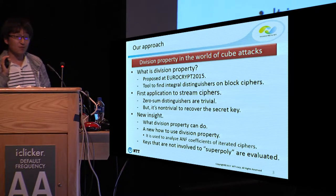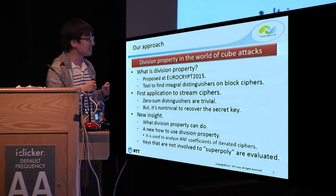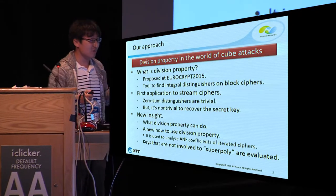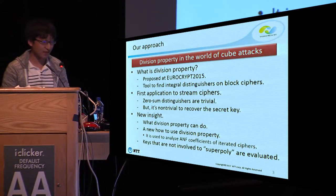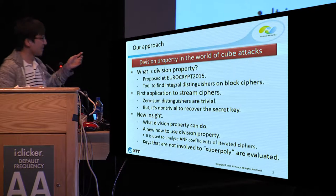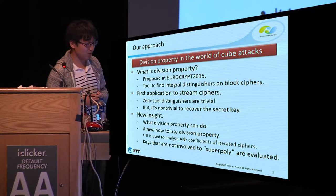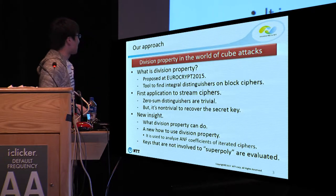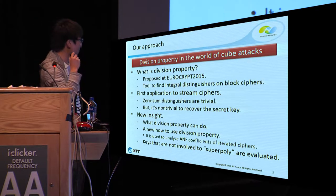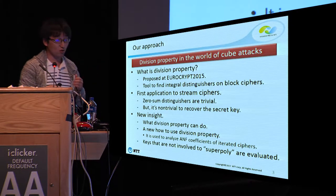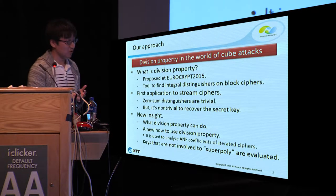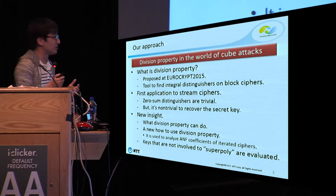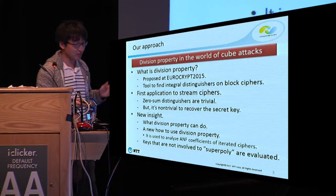If we consider only the key initialization part of the stream cipher, this structure is very similar to a block cipher. So evaluating a zero-sum integral distinguisher for stream ciphers is trivial using this approach. But key recovery is non-trivial. I want to propose how to recover the secret key. To realize this key recovery attack, I explain what division property can do, propose a new way to use division property, and as a result we can identify secret key variables not involved in the superpoly, and finally recover the secret key.